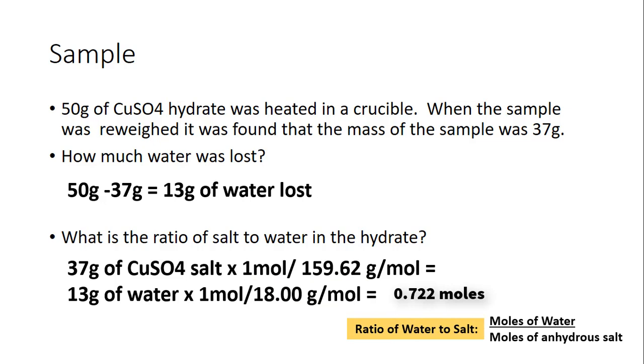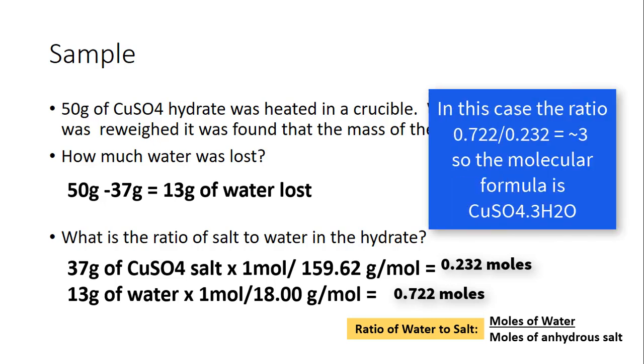If we know 37 grams of the anhydrous salt and the molar mass of the anhydrous salt, we can determine how many moles of anhydrous salt we have. Then the ratio of salt to water is the moles of water divided by the moles of anhydrous salt. That's how we determine that ratio. From that we can write the molecular formula for the hydrate.